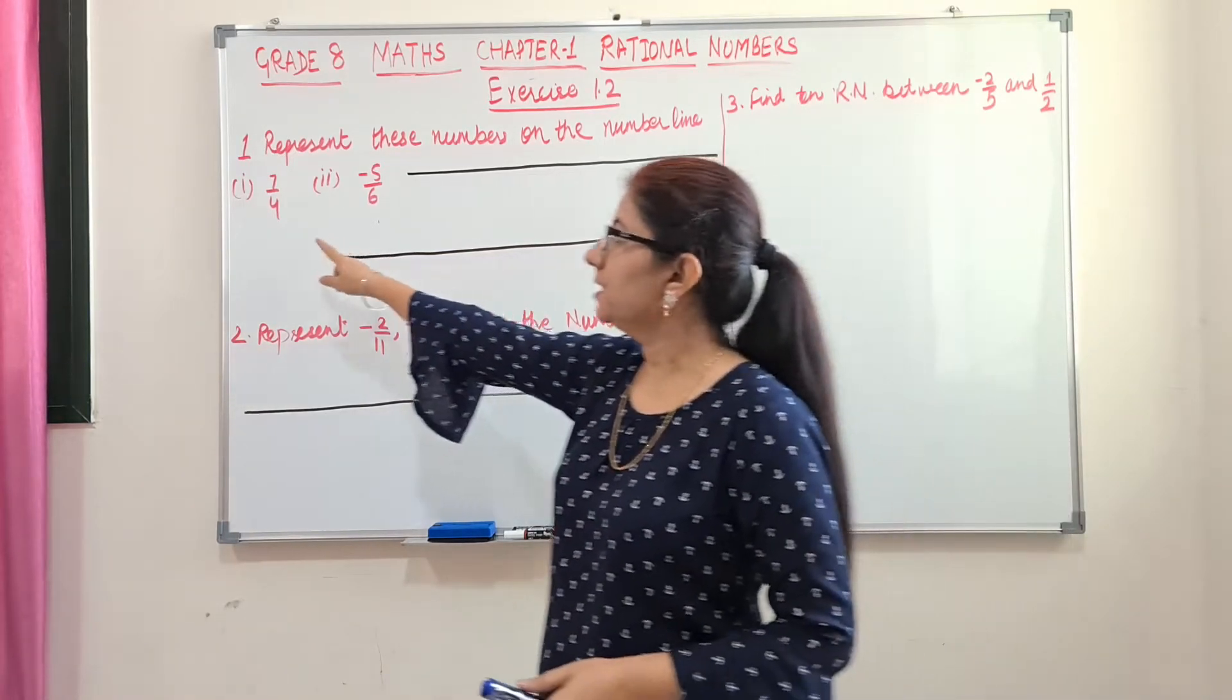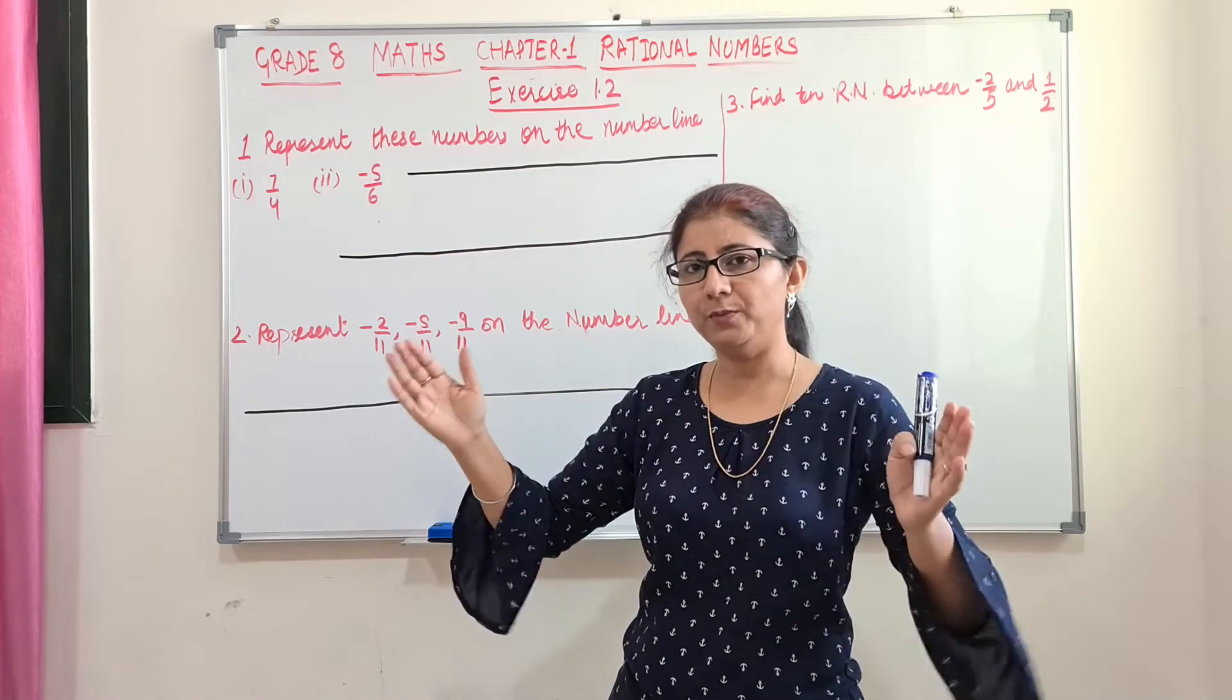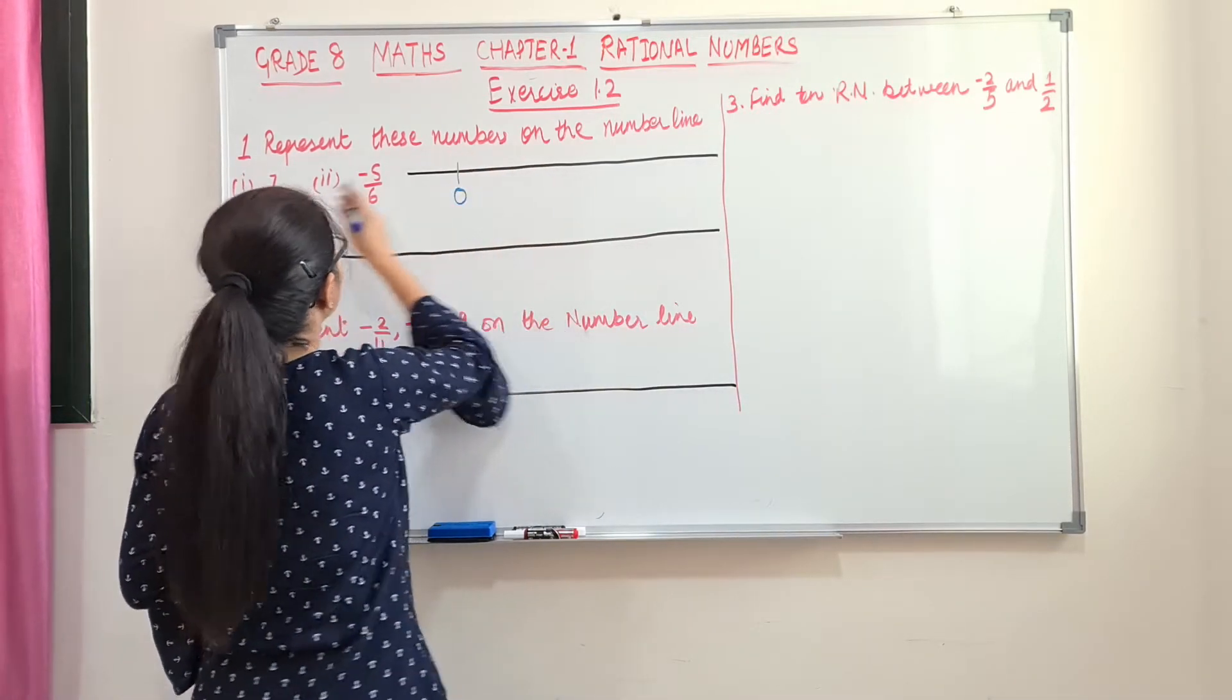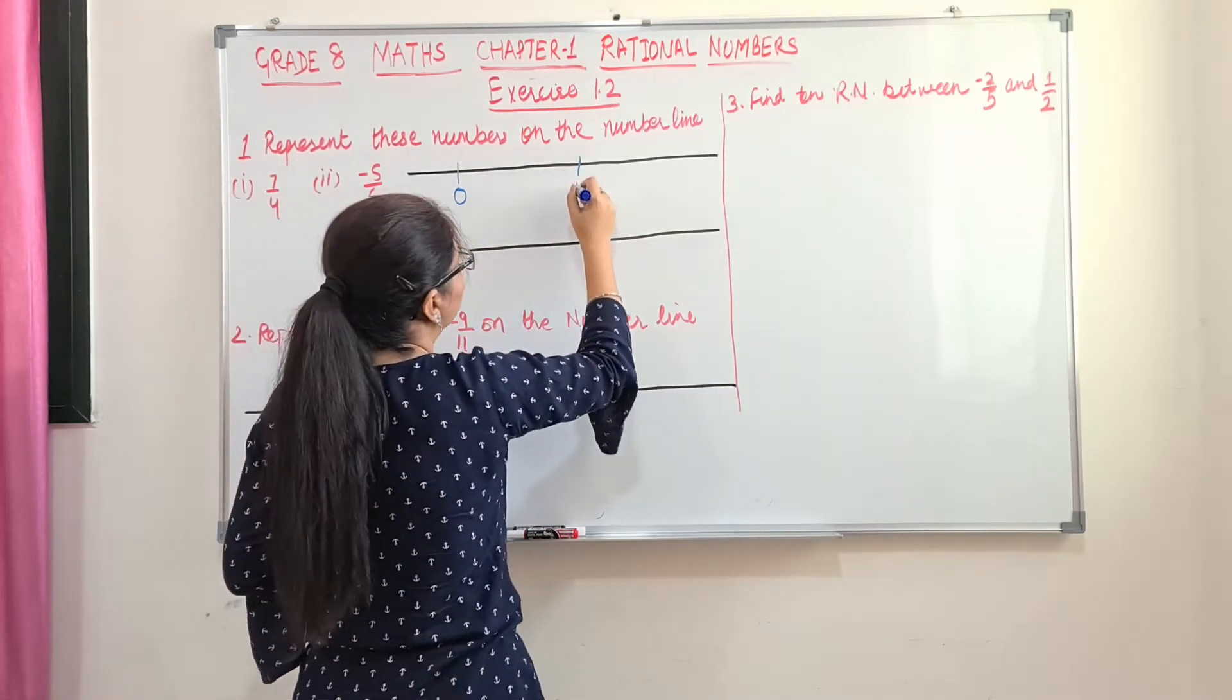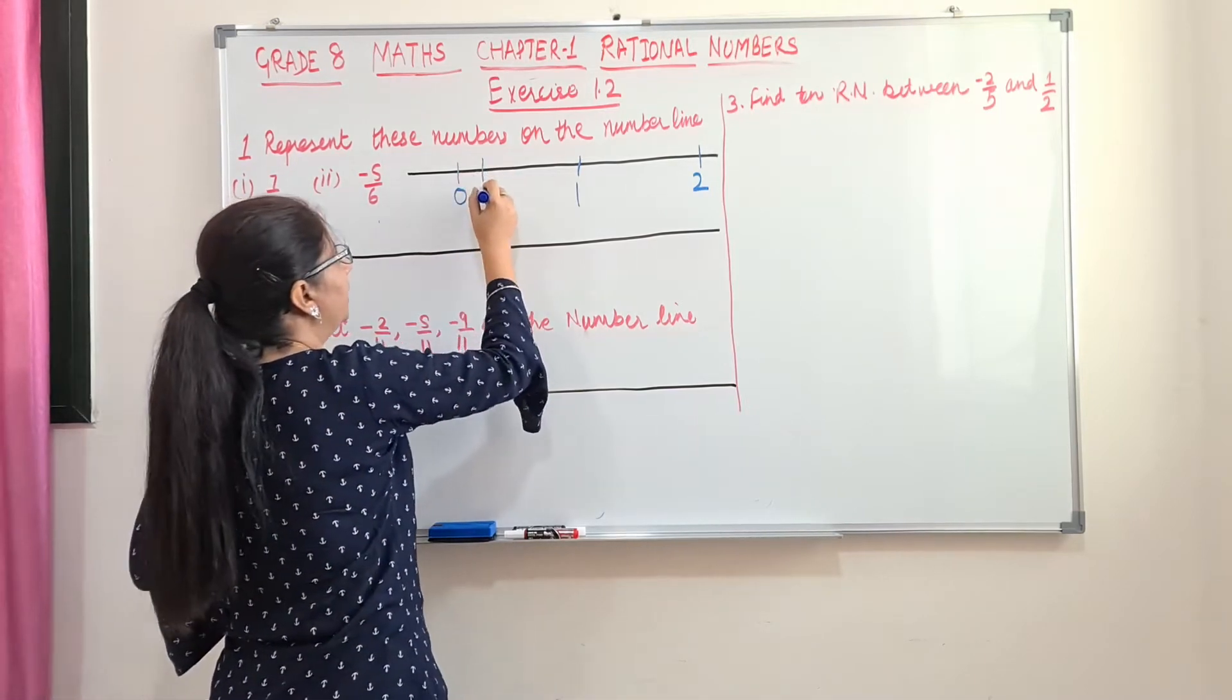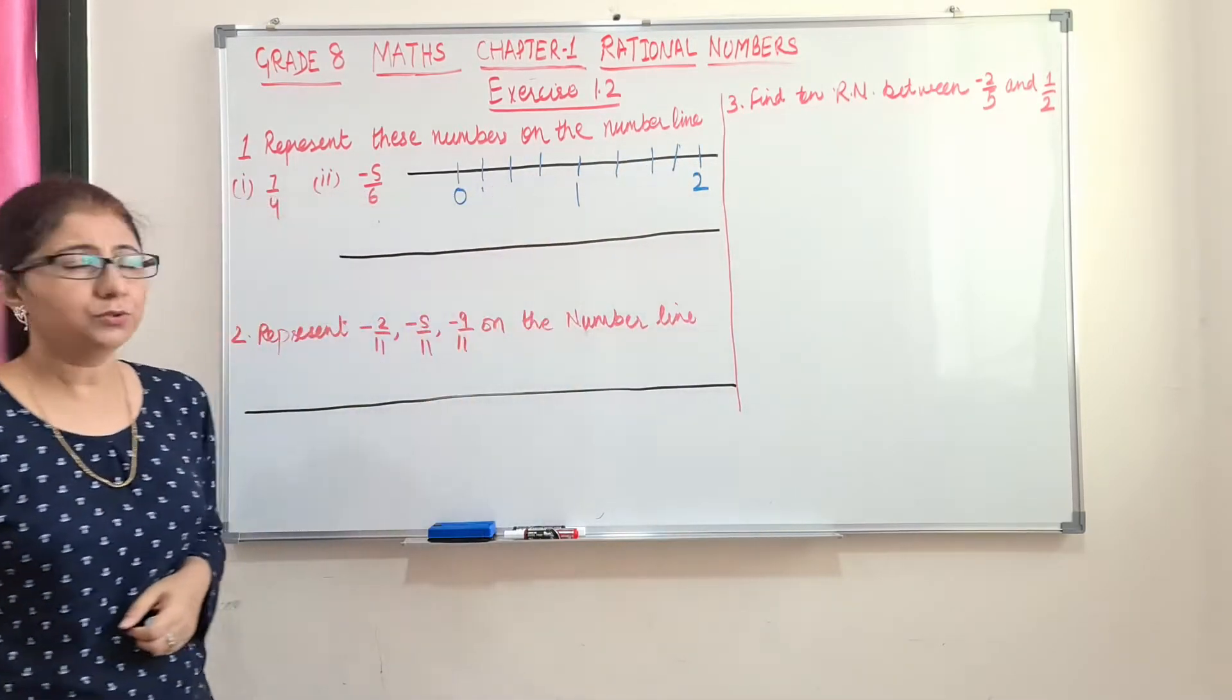The first question is represent these numbers on the number line. So first question is 7 by 4. As I mentioned earlier, we need to check the denominator. Here denominator is 4, that means we will split the two numbers in 4 separate divisions. So let's start. Here we will mark 0 because only positive number is to be represented here. So we will mark 0, then 1 and 2. So 4 divisions in 1. So it is 1, 2, 3. Again, so 4 separate divisions in each two numbers.